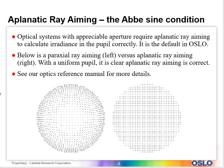On the left here you see what would happen if you were to aim the rays paraxially, and then on the right we have aplanatic ray aiming. Now if you have a uniformly illuminated pupil, it's very clear that the sampling is much more accurate when you have aplanatic ray aiming.